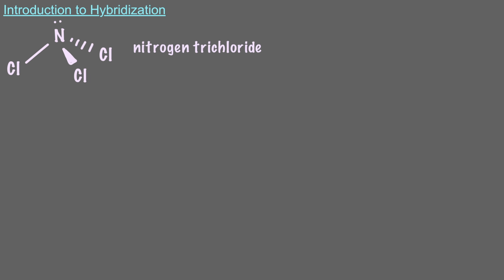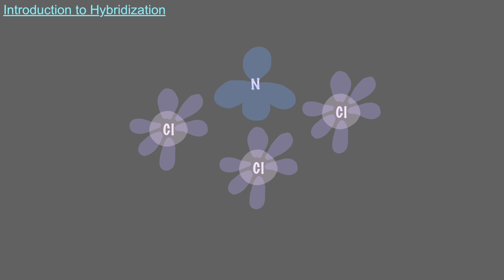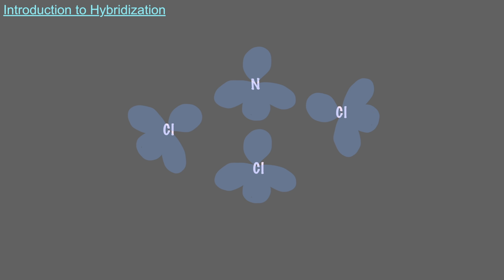If, however, we were looking at the nitrogen trichloride molecule, the nitrogen would hybridize sp3, and so would all three of the chlorines. In the next video, we'll see how the hybrid orbitals combine to make molecular orbitals.